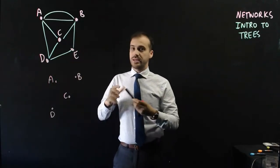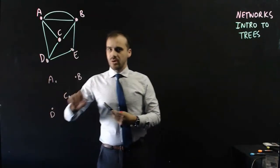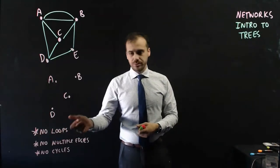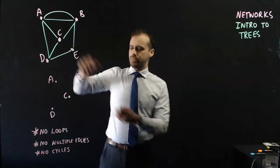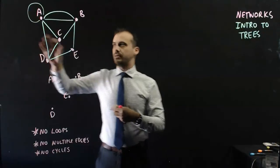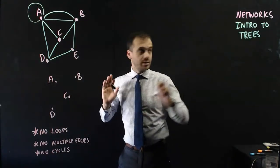Now to create a tree, we need to join up A, B, C, and D. But there are some rules when we join them up. So the rules are no loops. There's no loops here at the moment. There's no edge hanging off here like that. So no loops in a tree.